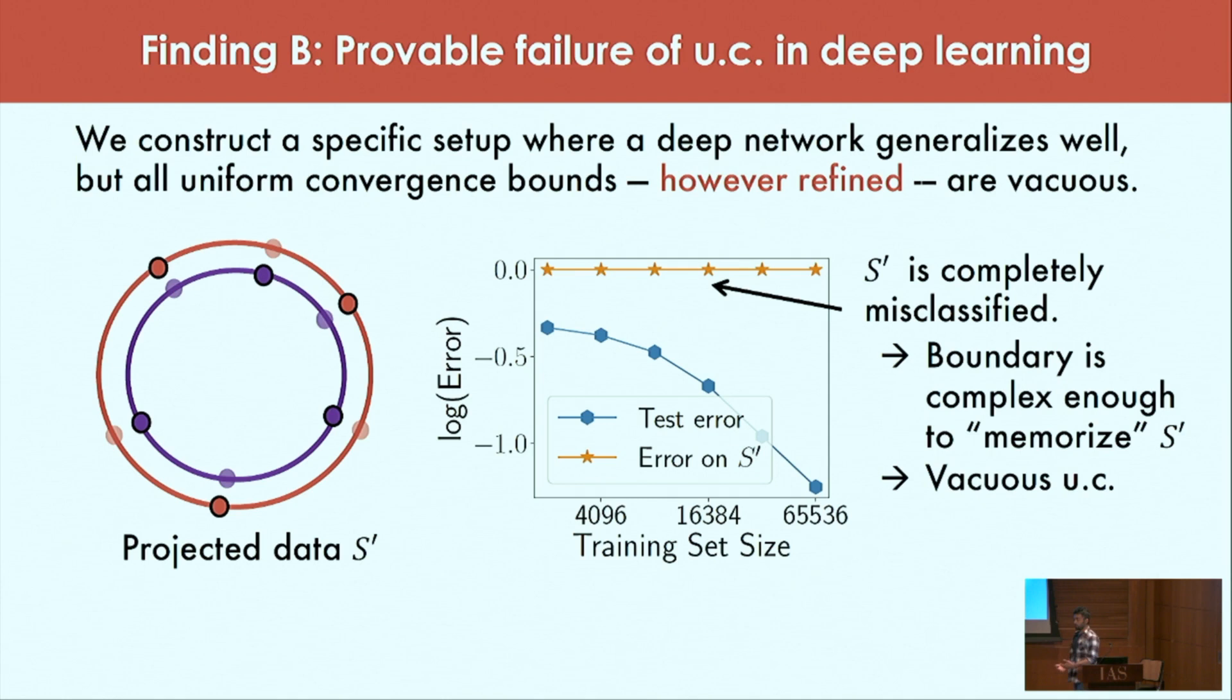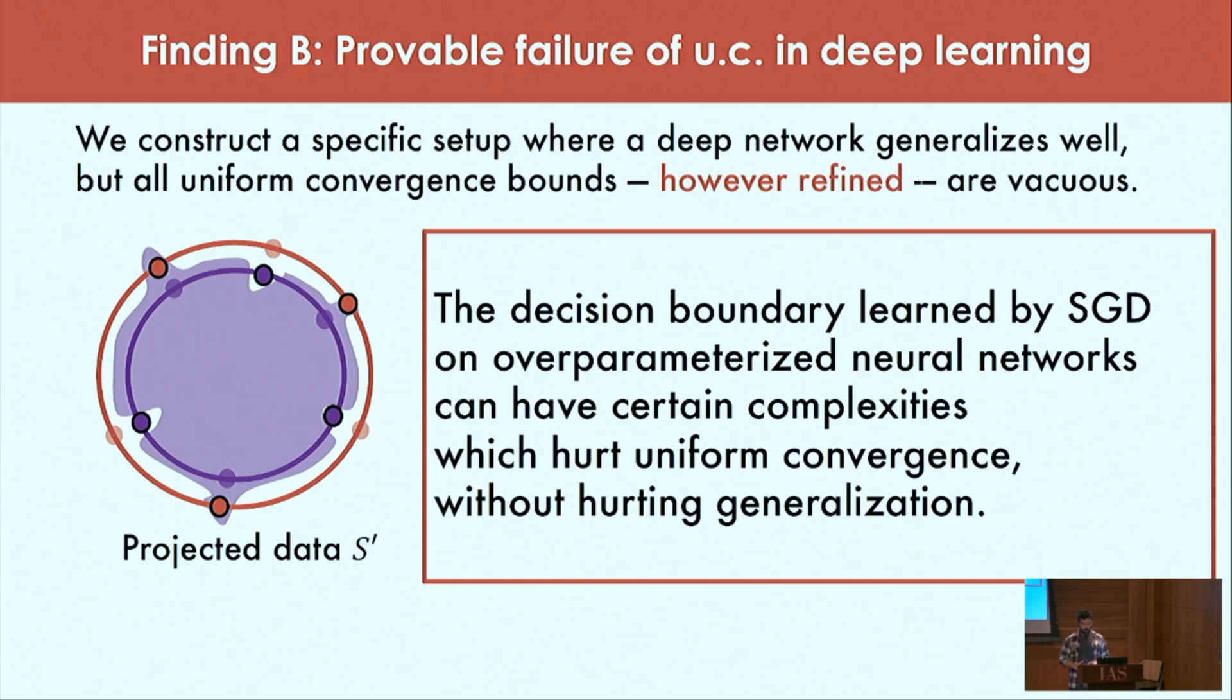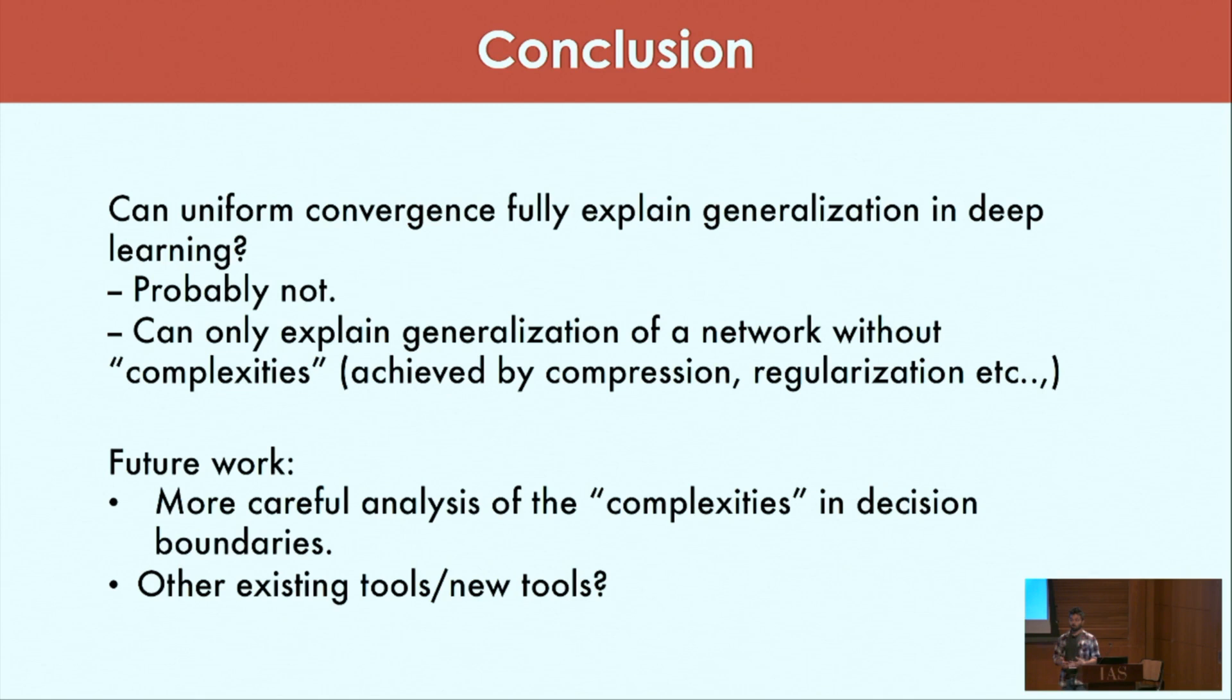Because of this we mathematically show that this implies vacuous uniform convergence even for the more refined uniform convergence bounds. The intuitive takeaway here is that the decision boundary in deep learning tends to have certain kinds of complexities, and these complexities can affect uniform convergence making it fail in certain situations without affecting the generalization error. Our theories must somehow take into account that this is happening. In conclusion, we have shown two findings which cast doubt on the power of uniform convergence to explain generalization in deep learning. Looking ahead we believe that we should go beyond uniform convergence at least as it is currently applied, or even explore other kinds of learning theoretic tools like stability.